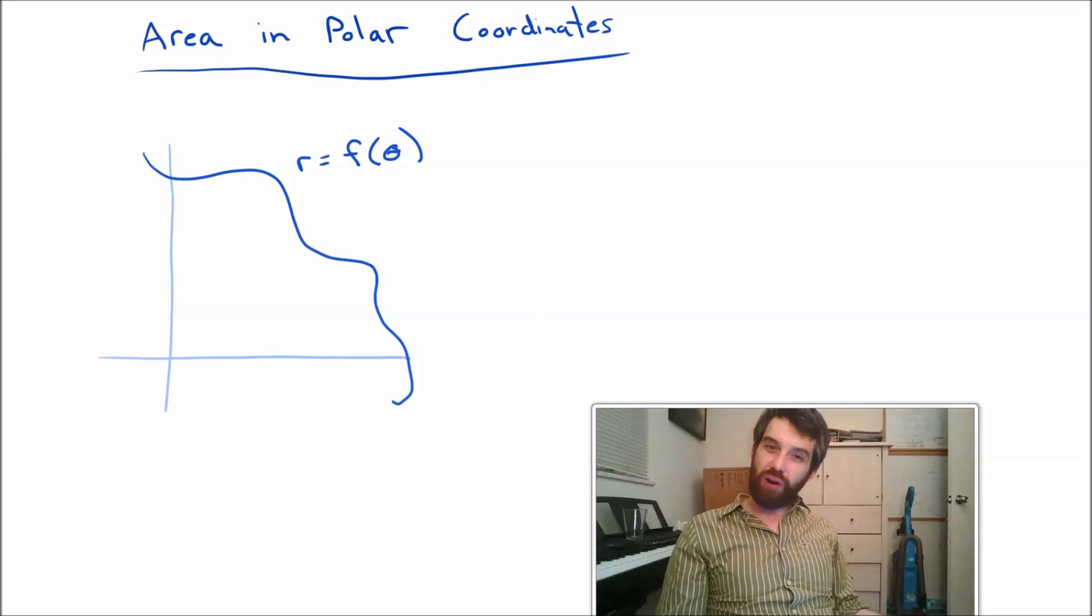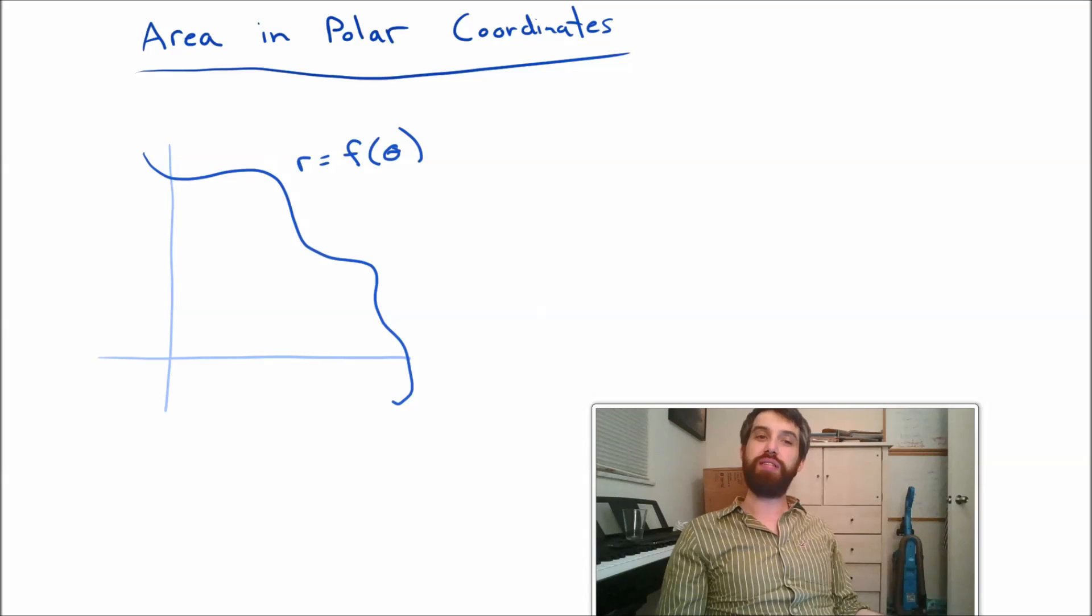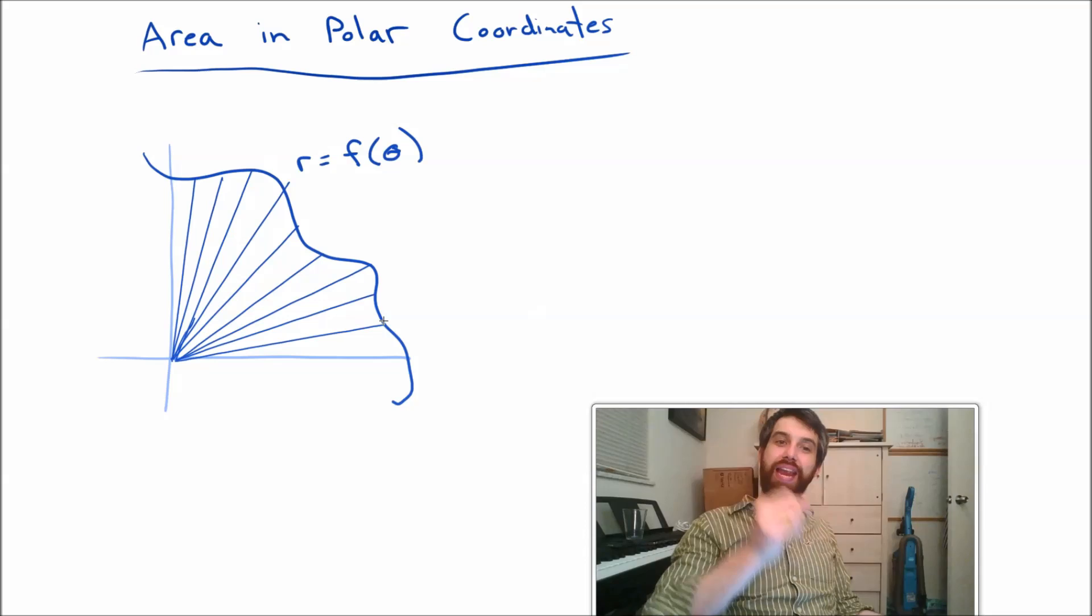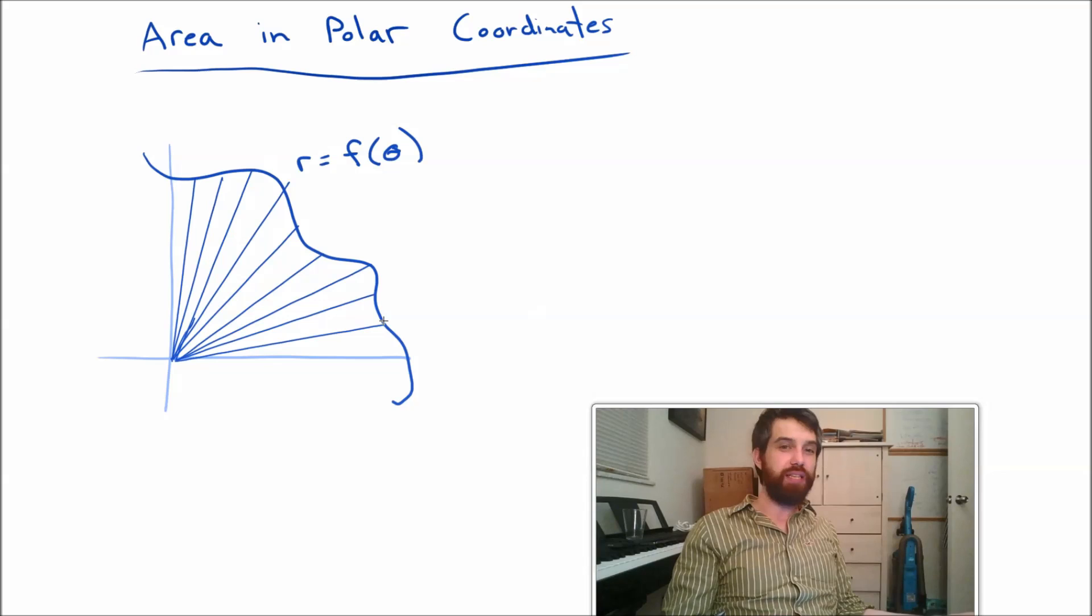When we're in polar, we have a somewhat different symmetry that we want to exploit. In particular, I want to write this as a sum of triangles. The idea here is that each of these sort of spokes that I've drawn goes out to an F of theta when the spoke is at some angle theta. So it sort of represents the natural symmetries of polar coordinates very nicely.